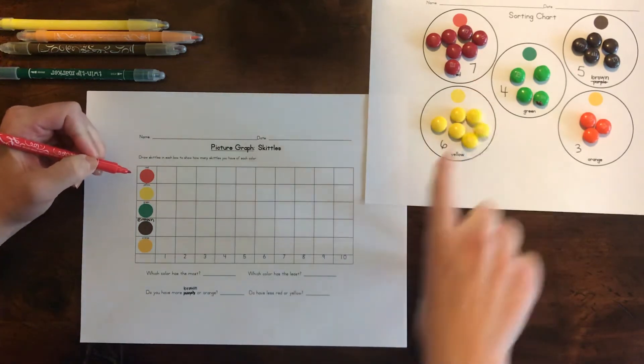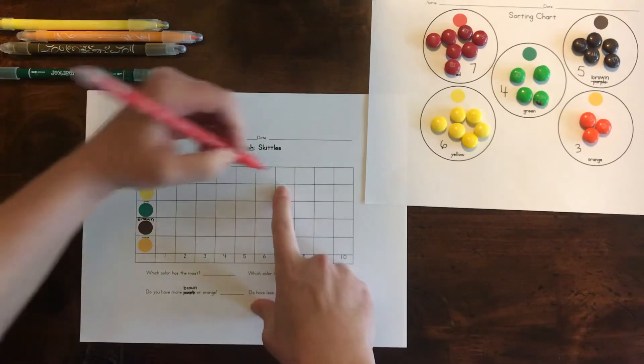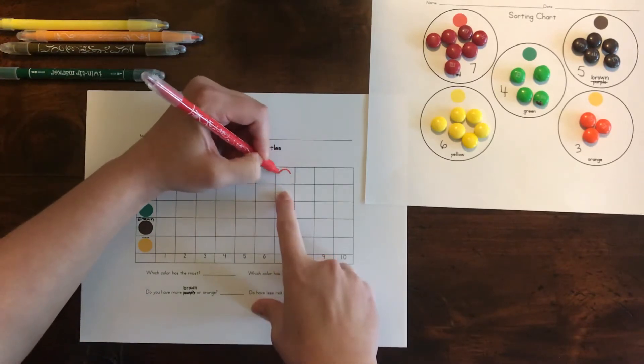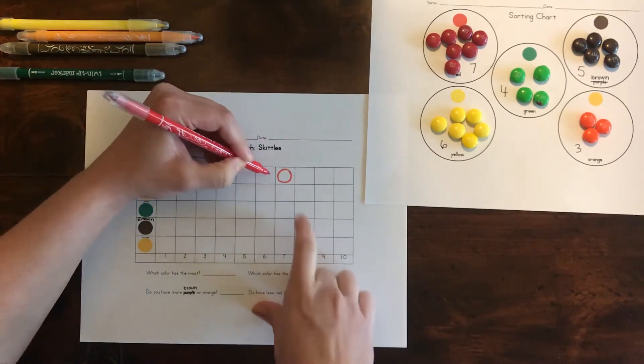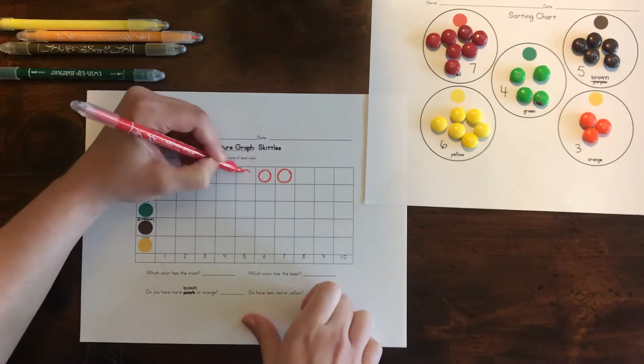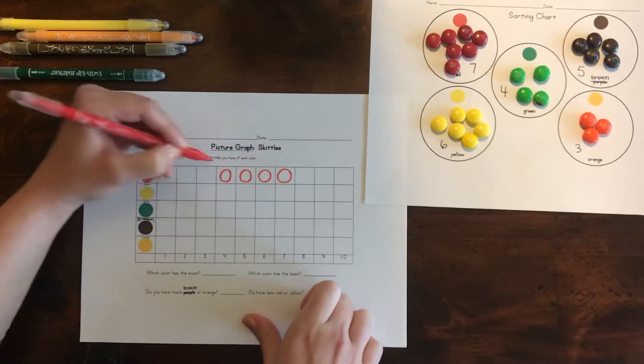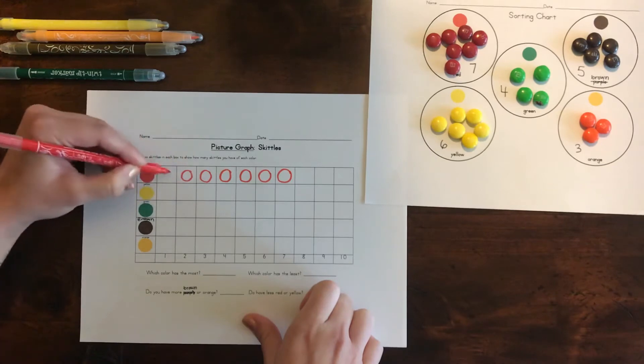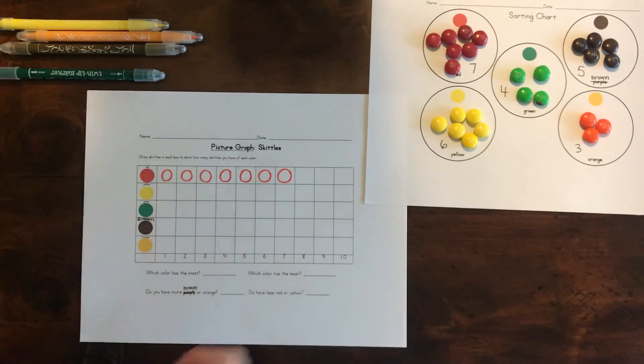So I'm going to look at the graph and then I look at how many red I have. I have seven. So I look over here, there's the seven. I go up to red. I'm going to draw a circle. So I know that's where I'm going to stop and I'm going to draw all seven of them.